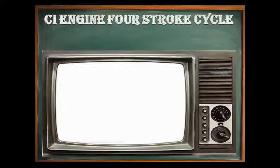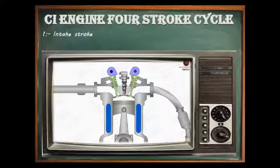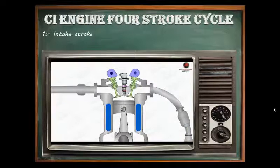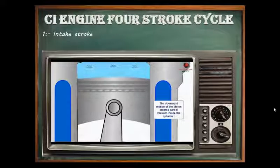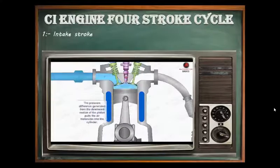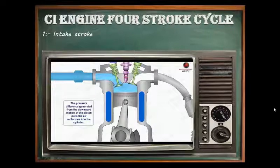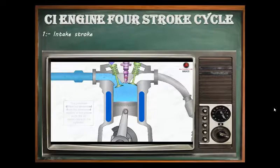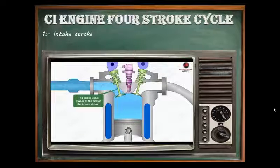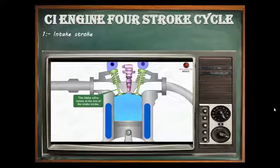The first stroke of the CI engine is the suction or intake stroke. The piston starts moving from the top end of the cylinder to the bottom end, and simultaneously the inlet valve opens. At this time, air at atmospheric pressure is drawn inside the cylinder through the inlet valve. The inlet valve remains open until the piston reaches the lower end of the cylinder, after which the inlet valve closes and seals the cylinder.